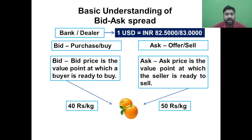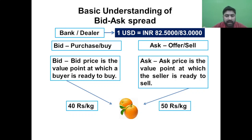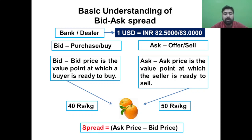They arrive at a price acceptable to both parties and then the trade executes. To be clear: ask is the price at which the seller is willing to sell, and bid is the price at which the buyer is willing to buy. The spread is the gap between the ask price and the bid price. In our example, the bid was ₹40/kg and the ask was ₹50/kg, so spread = ask − bid = 50 − 40 = ₹10.